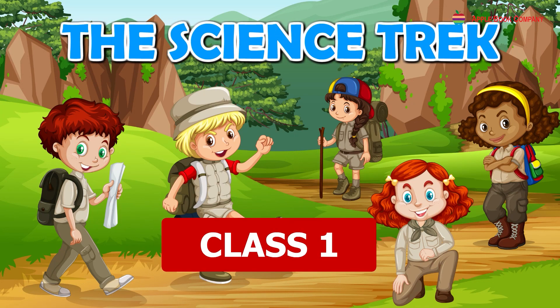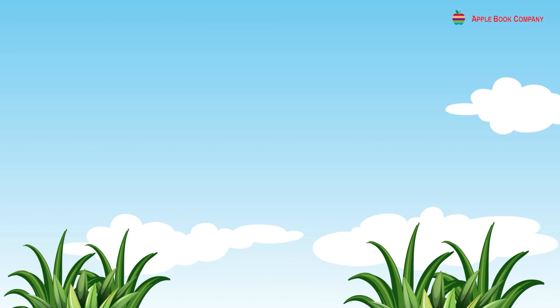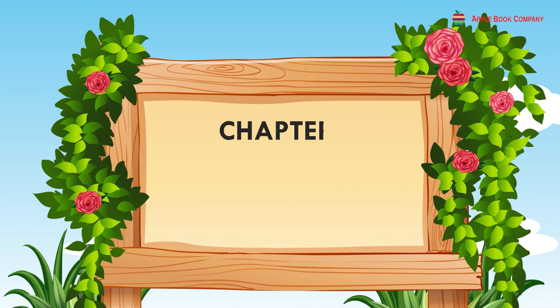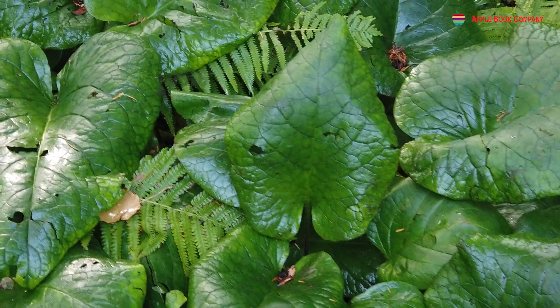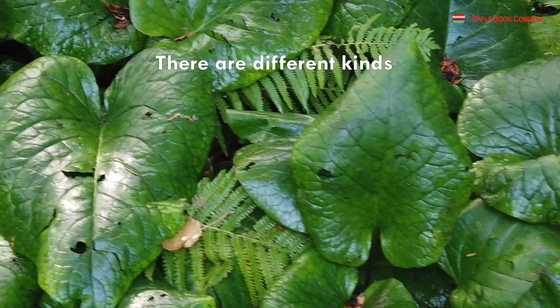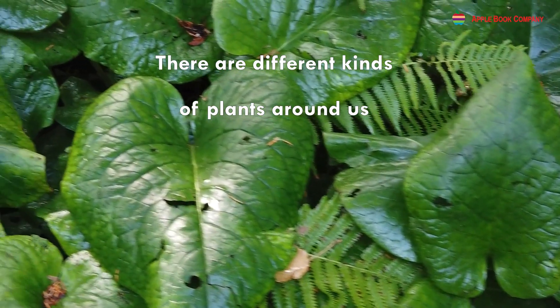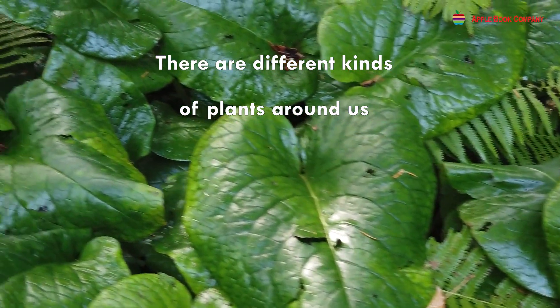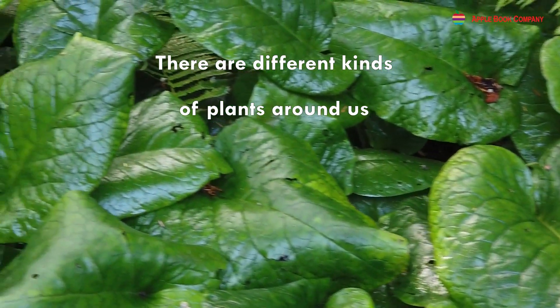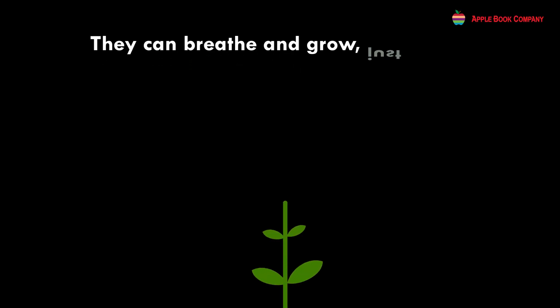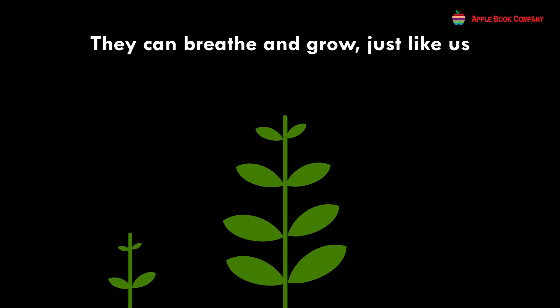The Science Trek Class 1 Chapter 2: Plants Around Us. There are different kinds of plants around us. Plants are living things. They can breathe and grow just like us.